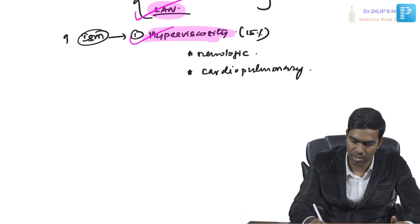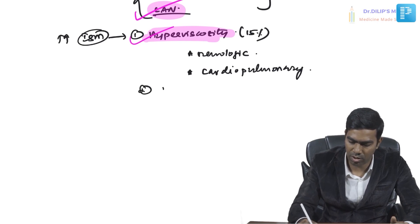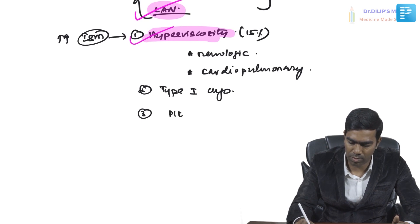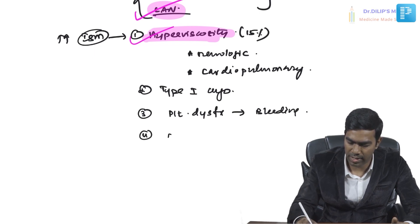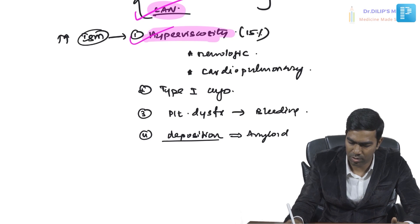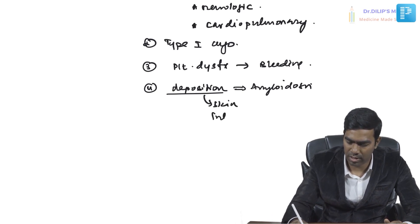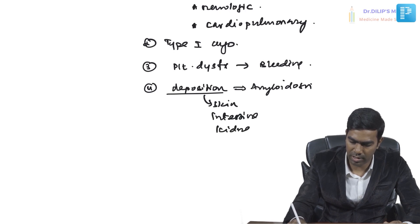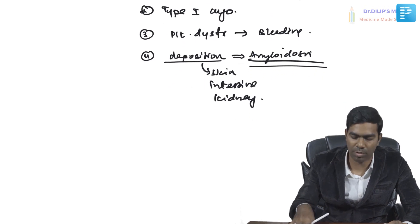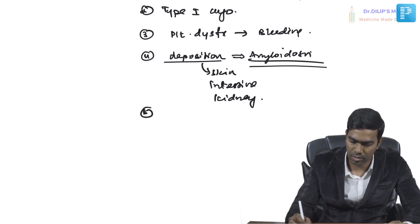Elevated IgM can cause additional problems. Patients may develop Type 1 cryoglobulinemia due to the monoclonal immunoglobulin. They can also have platelet dysfunction leading to mucosal bleeding. IgM deposition can result in amyloidosis and glomerulopathy, with deposits typically seen in the skin, intestine, and kidney.